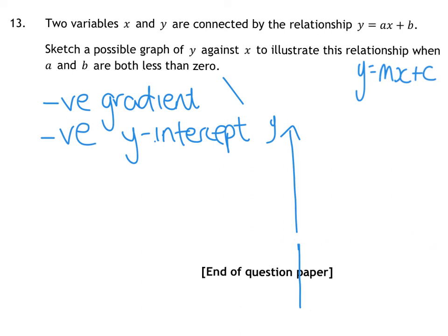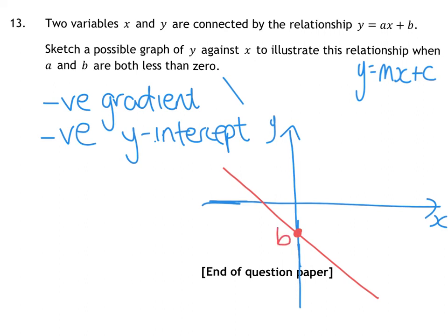So a negative gradient is a downward sloping line. What they need to see is a coordinate diagram with a downward sloping line that has a negative y-intercept. All you would do is mark on there that that was b, because we don't know what the number was. And that's me done — thank you very much, I hope that's helped.